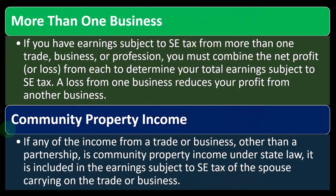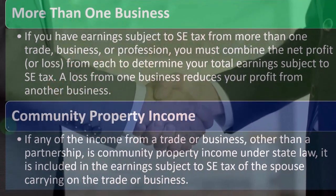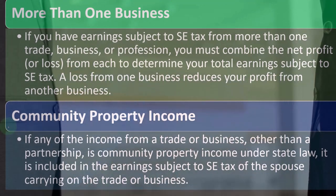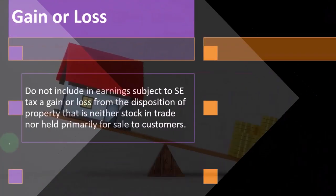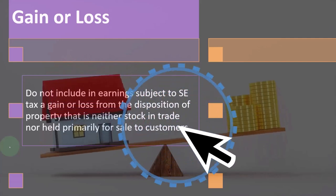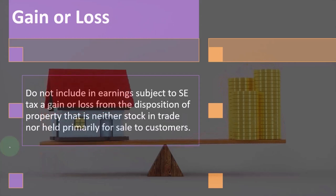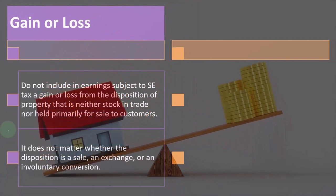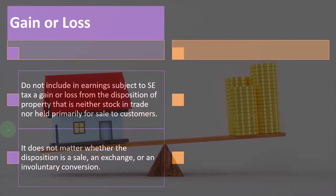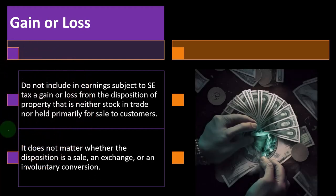Regarding community property income: if any income from a trade or business other than a partnership is community property income under state law, it is included in the earnings subject to SE tax of the spouse carrying on that trade or business. Gain or loss rules: do not include in earnings subject to SE tax a gain or loss from the disposition of property that is neither stock in trade nor held primarily for sale to customers — regardless of whether the disposition is a sale, exchange, or involuntary conversion.